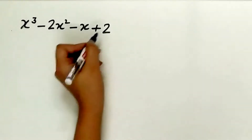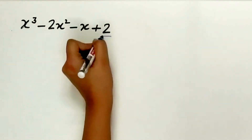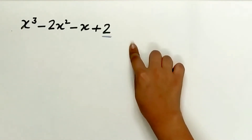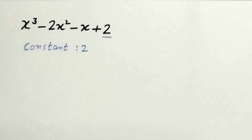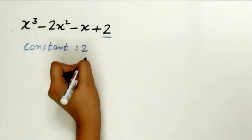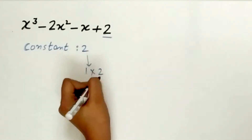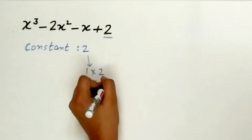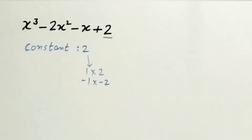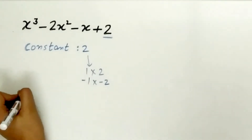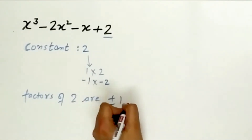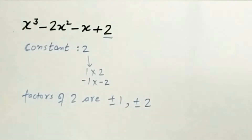Step 1 is to find the factors of the constant. The constant in the given polynomial is 2. 1 multiplied by 2 is equal to 2, and minus 1 multiplied by minus 2 is positive 2. So the factors of 2 are plus or minus 1 and plus or minus 2.